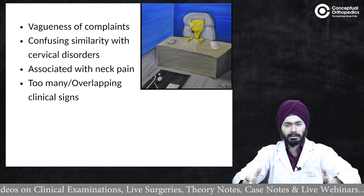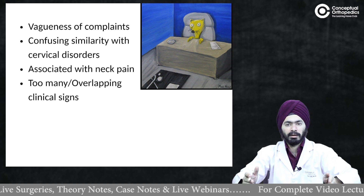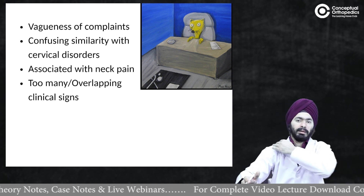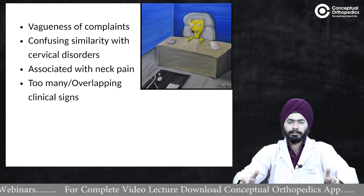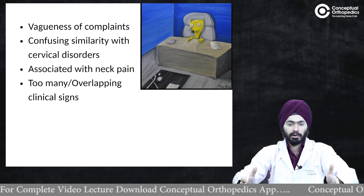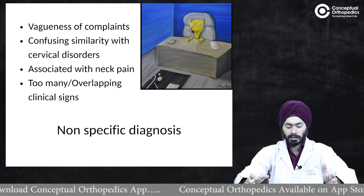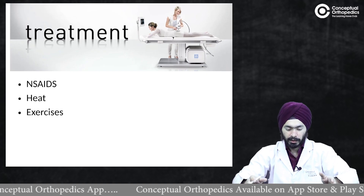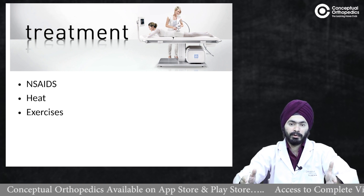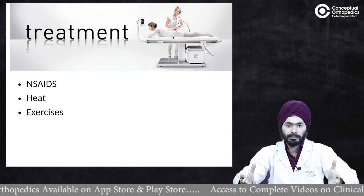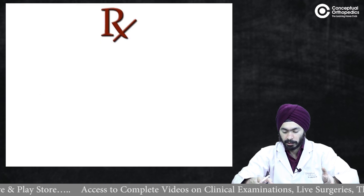These shoulder pains can be quite confusing, with similar pathologies occurring in the cervical spine. The symptoms may be similar to pain around the shoulder girdle, behind the neck, and radiating into the arm. Neck pain is also very common in these patients, resulting in too many overlapping clinical signs and symptoms, making diagnosis quite nonspecific. Treatment for these patients — especially impingement syndrome — is largely symptomatic: NSAIDs, hot packs, ice packs, and exercises.